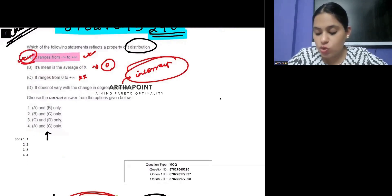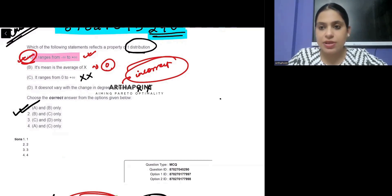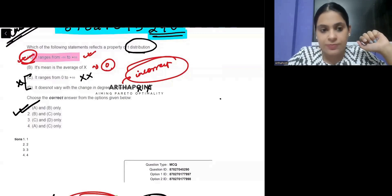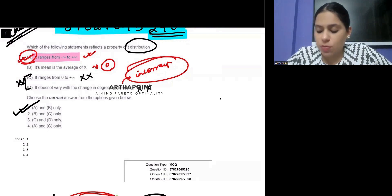Now, many of you because you know that statement C and D were incorrect. Yeh doono definitely incorrect the. So, many of you have gone ahead and marked answer as 1 which is A and B. If I would have been at your place and I would have marked one, I would have marked one with it. Because the other three, you know, other two C and D are definitely incorrect. But ideally, this question should be dropped and all of you should be getting marks for it.